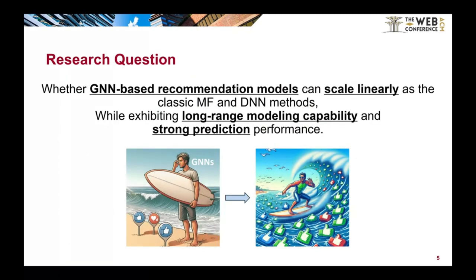In this work, we try to answer this research question: whether graph neural network-based recommendation models can scale linearly, as classic matrix factorization and deep neural network methods, while exhibiting long-range modeling capability and strong prediction performance.